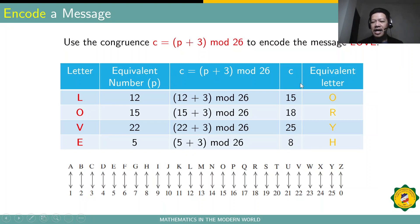And then, you will now get the corresponding letter for these numbers. So, number 15 is O, number 18 is R, and number 25 is Y, and number 8 is actually H. So, this is what we call the ciphertext. O-R-Y-H, this will be actually received by the receiver, and you can only decrypt this if the receiver knows how to decrypt it and knows what will be the formula in decoding this O, R, Y, H. So, that's how to encode a plaintext to a ciphertext using a certain congruence or an encryption formula.